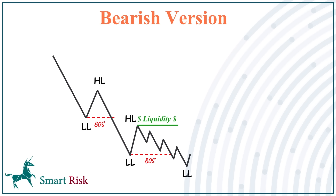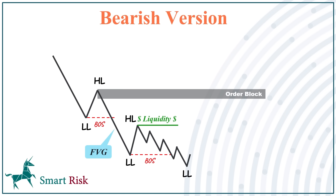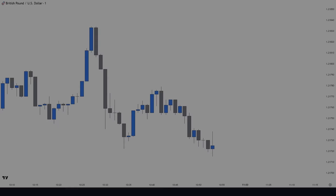In the bearish scenario, we have a break of structure to the downside with no fair value gaps. The gap is precisely above the swing high and a valid order block, which is a perfect supply zone to enter a short trade. In this case, the change of character is not valid for us — we consider it as a liquidity grab movement. Then we expect the market to continue pushing in the same bearish direction when it taps into the supply zone.